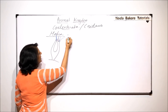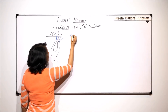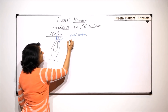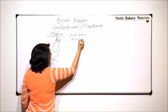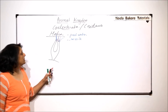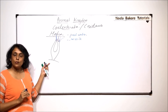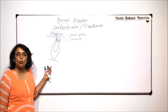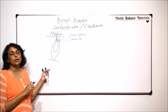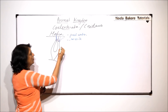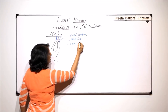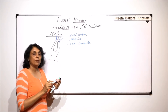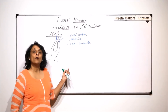Hydra is a freshwater cnidarian. Cnidarians are marine, but Hydra is a freshwater cnidarian and it is sessile. Normally it remains attached to a substratum, but it can show locomotion. Locomotion is of different types.